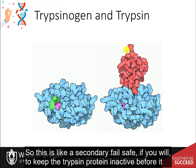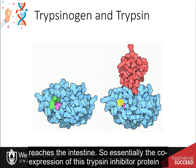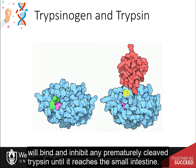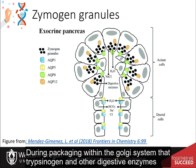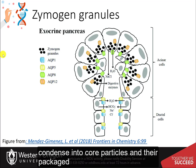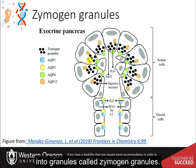The PSTI acts as a secondary fail-safe to keep the trypsin protein inactive before it reaches the intestine, binding and inhibiting any prematurely cleaved trypsin. During packaging within the Golgi system, the trypsinogen and other digestive enzymes condense into core particles and are packaged into granules called zymogen granules.